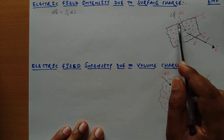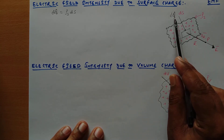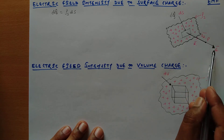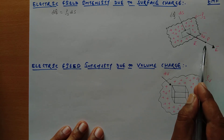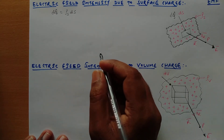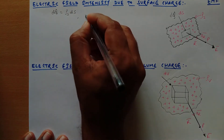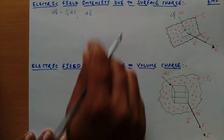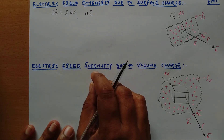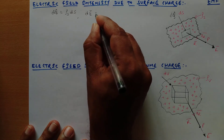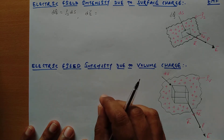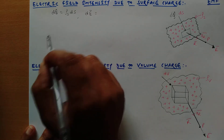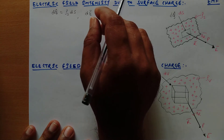Due to this differential charge dq, we can find the differential amount of electric field at a point P. So we can write the differential amount of the electric field, which we can find by taking the values of the differential amount of the charges.